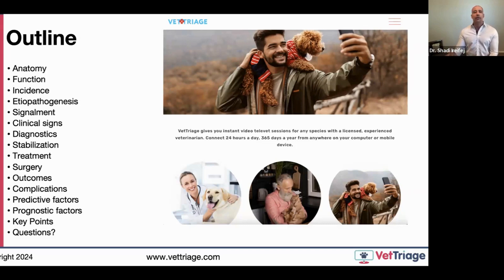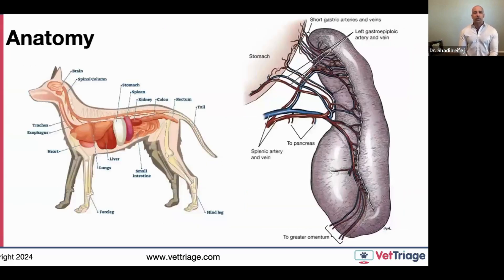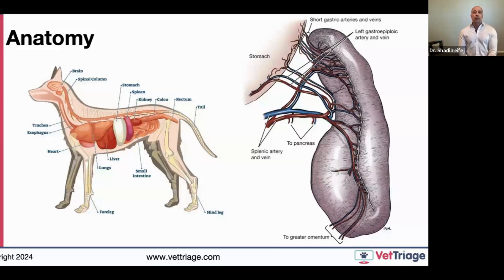The spleen is well known to most veterinarians. The picture of the dog is a bit misleading — it shows the spleen sandwiched between the stomach and kidney, which isn't entirely accurate. The spleen is actually quite mobile and can vary in shape and size. This is important when collecting radiographs, as it will silhouette with the liver and surrounding soft tissues, causing potential confusion in interpretation.